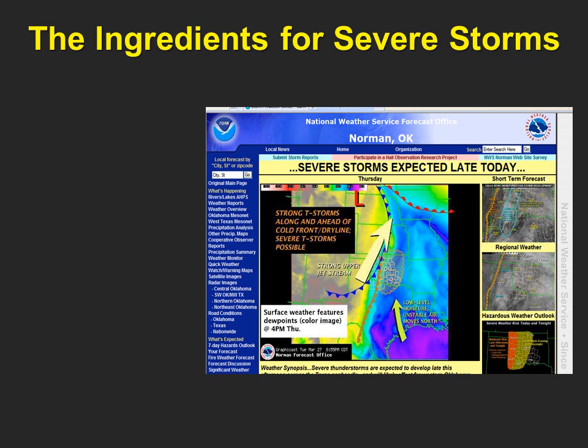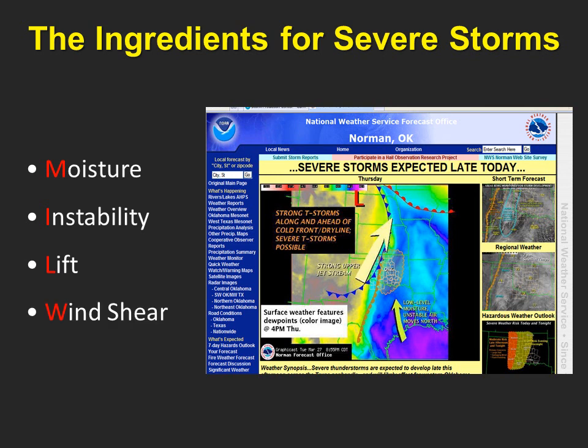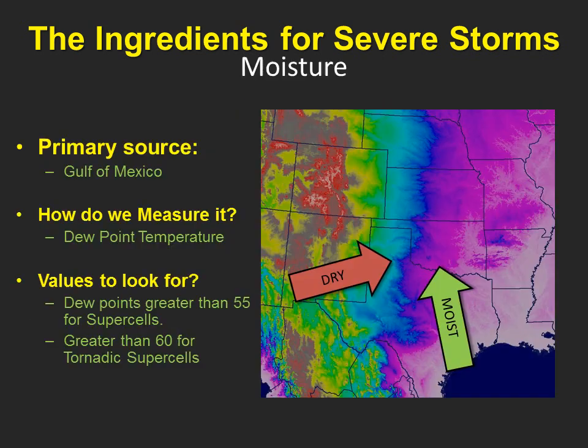In general, we can break down the ingredients of severe storms into four separate but easily understood components: moisture, instability, lift, and wind shear — with wind shear playing a vital role in the development of supercell thunderstorms.